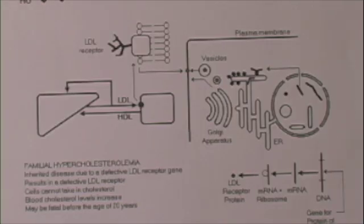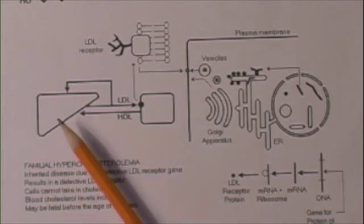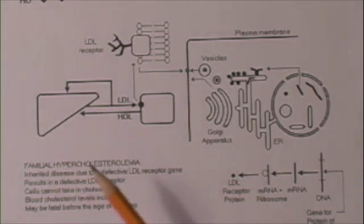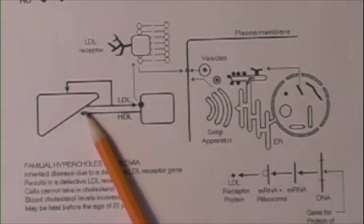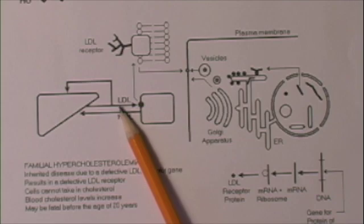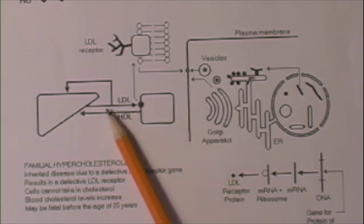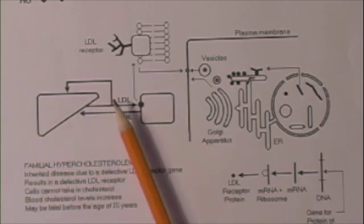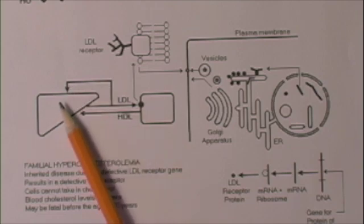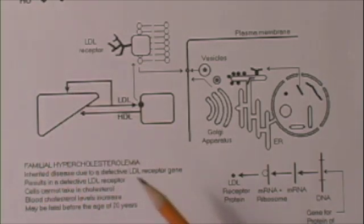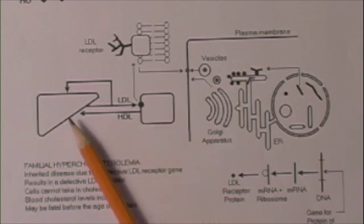Now, keep in mind this is a little simplified, but essentially this is what happens. Low-density lipoproteins are chiefly transported from the liver to the tissue cells. Excessive LDLs are transported back to the liver. High-density lipoproteins are transported from the tissues to the liver.